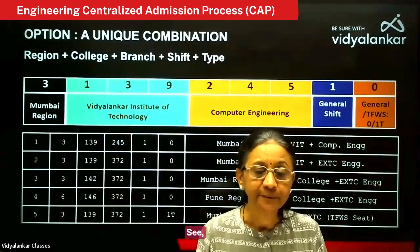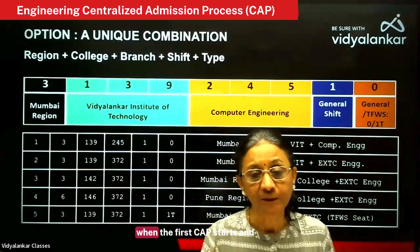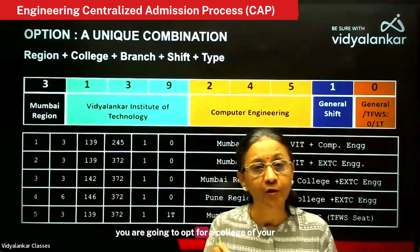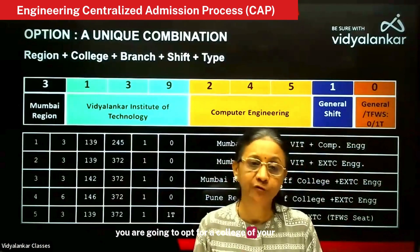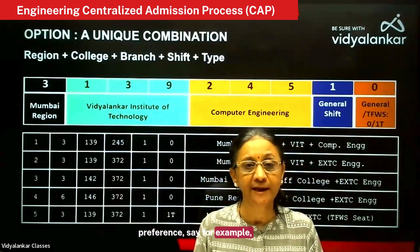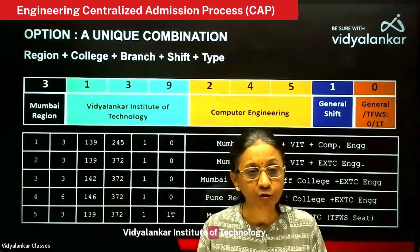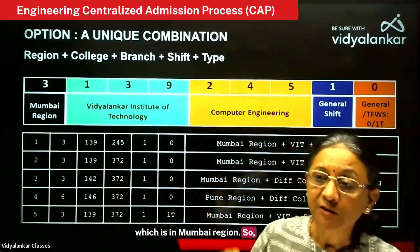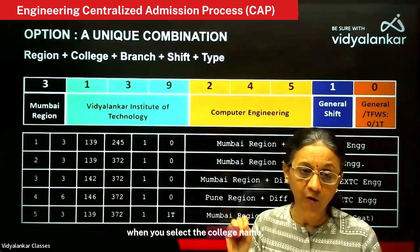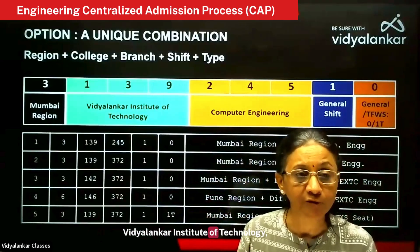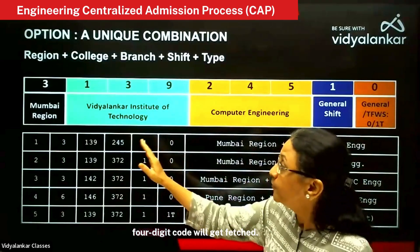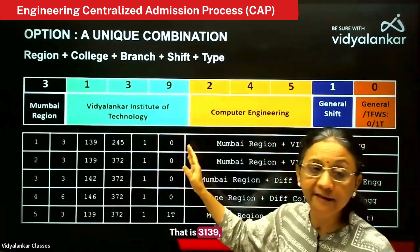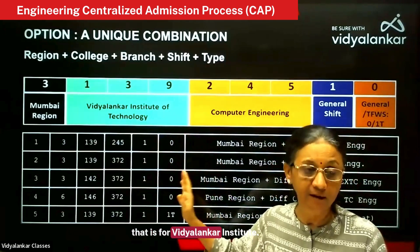So what is this code? When the first CAP round starts and you are going to opt for a college of your preference — say for example Vidyalankar Institute of Technology, which is in Mumbai region — when you select the college name, a four digit code will get fetched. That is 3139, for Vidyalankar Institute.